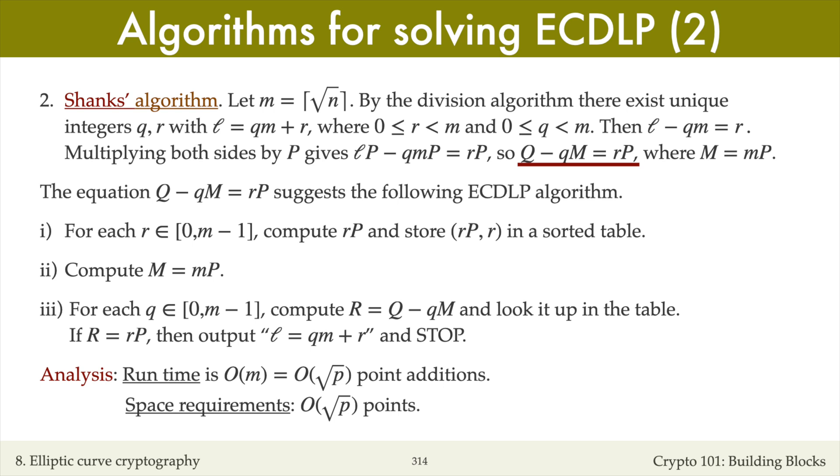This is also big O of square root of n, since m is at most the square root of n, which in turn is big O of square root of p by Hasse's theorem.